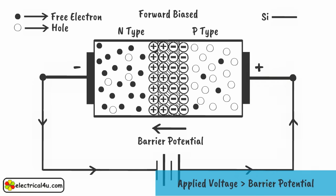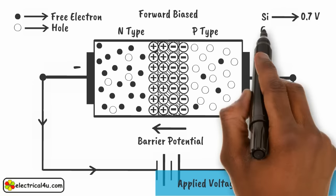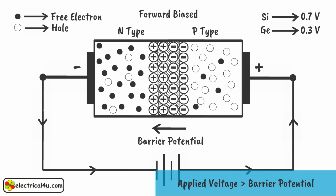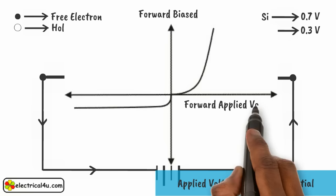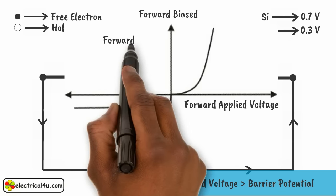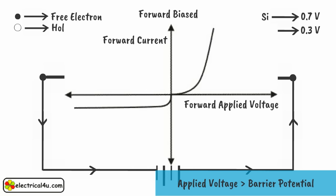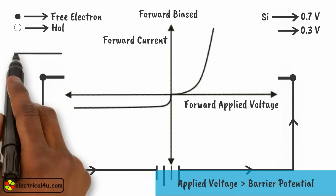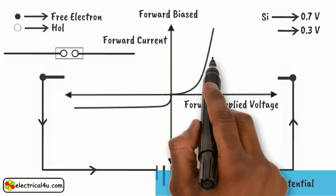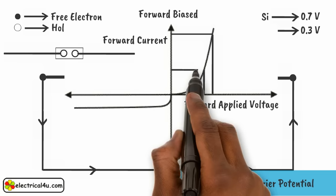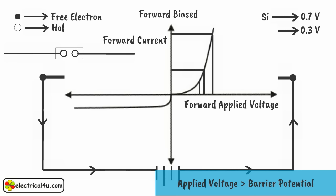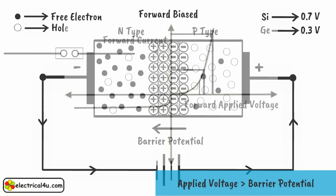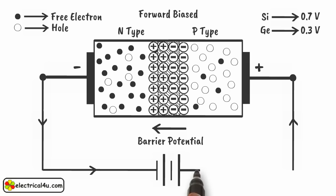For silicon, the forward bias voltage is 0.7 volts. For germanium, the forward bias voltage is 0.3 volts. If we apply more forward voltage than the forward bias voltage of the diode, the diode behaves as a closed switch, giving rise to an uncontrolled forward current. There is no more voltage dropping across the diode beyond this forward bias voltage. We can only limit the current by connecting external resistances in series with the diode.